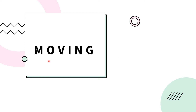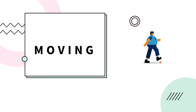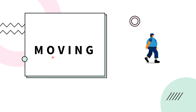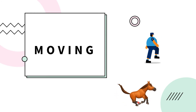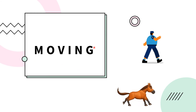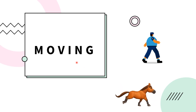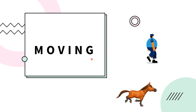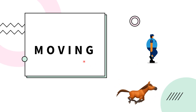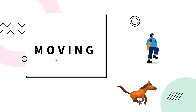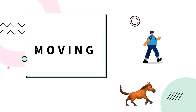Moving. What are the examples of moving? When you walk, you are moving. Walking is a motion of moving. Running — running is a form of moving. When you move something with the parts of your body, it is moving.